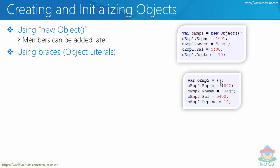The second way is using curly braces. Whenever you use a pair of curly braces like `{}` you are creating a new object — this is called an object literal. It is equivalent to `new Object()` and you can also add all the members later.